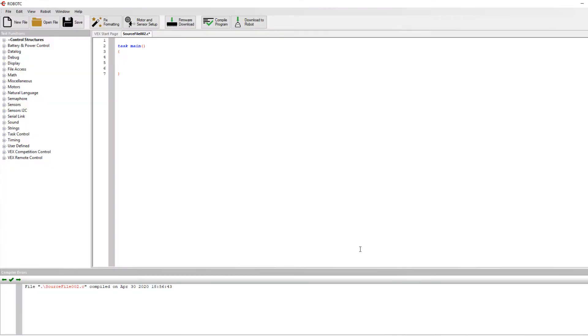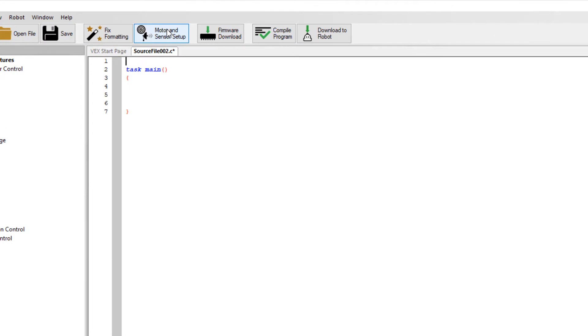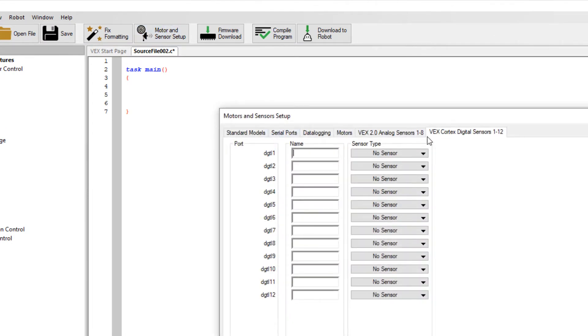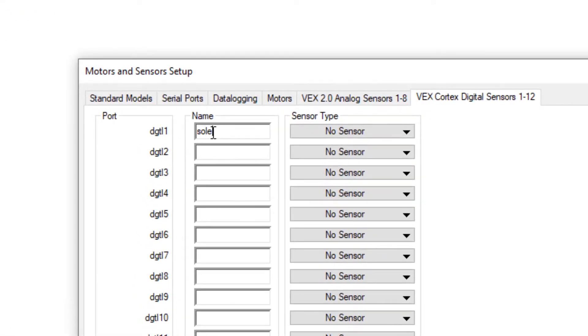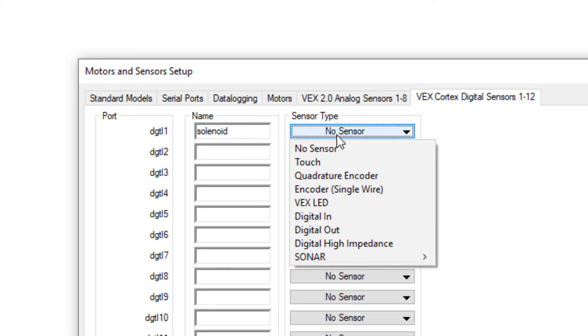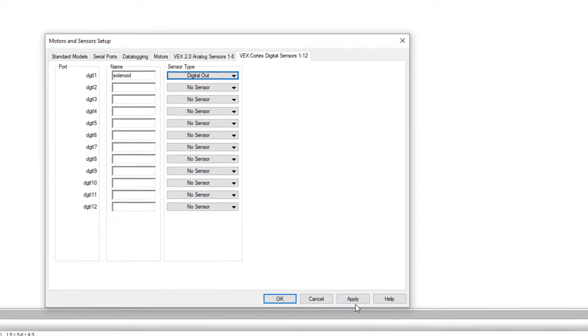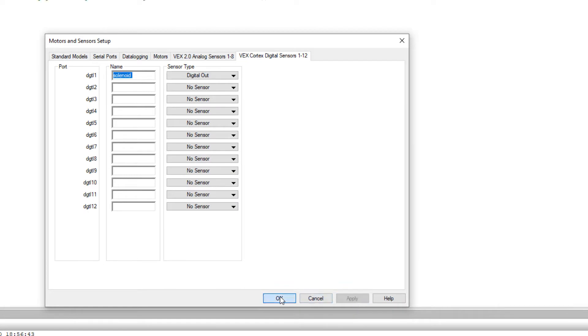Now that we're over to Robot C, let's write up a simple program. So I'll go to motors and sensors setup. I'm going to make sure I'm on the digital sensors tab, and I'm going to go to digital 1. This is going to be my solenoid. And because this is a microcontroller, it's going to allow me to change that port type. So it's no longer going to be an input, and it's going to become an output, just like it was when we did the VEX LEDs. So that's now a digital out, and apply and okay.